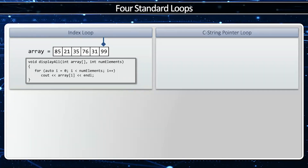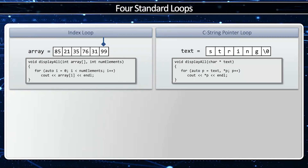The C string pointer loop is similar to the array, but the difference is I don't use an index, but rather I use a pointer. A C string has an array of characters with a null character at the end, so I don't need to know the number of elements — I just have to keep iterating until I find the null character. I'm going to start with p pointing to the first element, in this case lowercase s, and keep going as long as the element I'm pointing to is not the null character, which is the only false character. Then I advance the pointer by one and will end when I hit the null character, which evaluates to false.